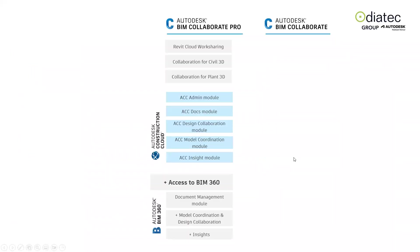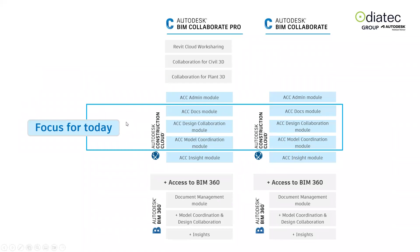Model Coordination comes as part of the BIM Collaborate Pro or BIM Collaborate subscription. BIM Collaborate Pro includes all the same modules except Revit Cloud Work Sharing. If you have Autodesk BIM Collaborate, you have access to Model Coordination, Design Collaboration, and Docs. BIM Collaborate Pro gives the same access, adding Revit Cloud Work Sharing — though I'm solely going to focus on ACC Model Coordination today.